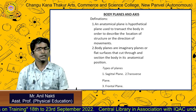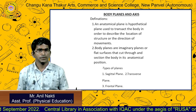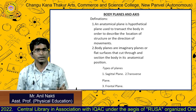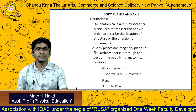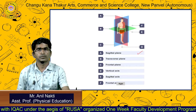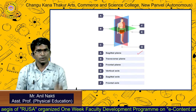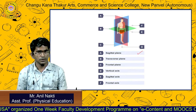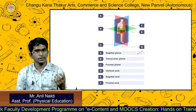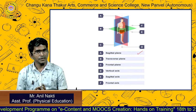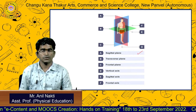There are three types of planes and three types of axis. First one is the sagittal plane. Second one is the transverse plane. And third one is the frontal plane. And there are three axis: first is the vertical axis, second is the sagittal axis, and third is the frontal axis.